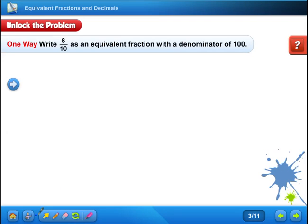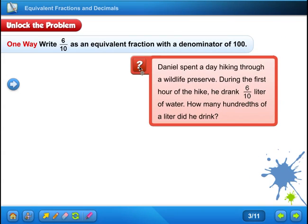Unlocking the problem. Let's pull out the question and see what it asks. Daniel spent a day hiking through a wildlife preserve. During the first hour of hiking, he drank six-tenths liter of water. How many hundredths of a liter did he drink? So let's underline how many hundredths of a liter did he drink, because that's what it's asking us. We know he drank six-tenths, but they're not asking us for tenths. They're asking us for hundredths.